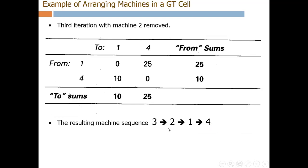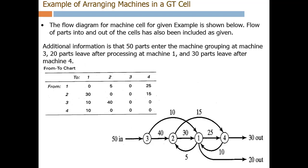The resulting machine sequence is 3, 2, 1, and 4. This is the logical sequence within the machine cell. A flow diagram is drawn showing machines arranged as 3, 2, 1, and 4, and we can also indicate how many parts are entering and leaving the cell at each point.